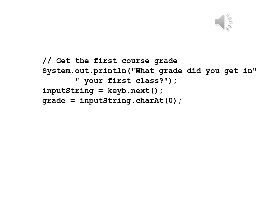Now we'll do the first instruction which is printInstructions. We now need to get the first course grade: System.out.println("What grade did you get in your first class?"). Then inputString = keyboard.next(), which will read the first collection of characters typed up to the first whitespace character. And then grade = inputString.charAt(0), which takes the first character at the beginning of the string that was just read in.